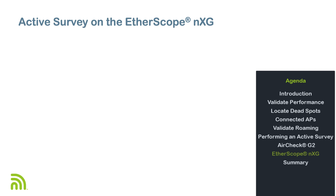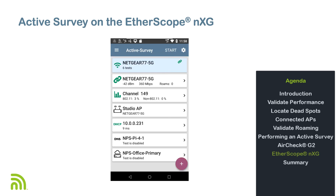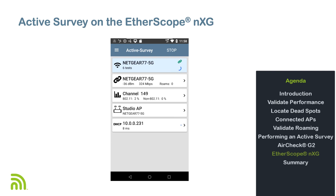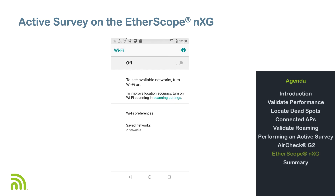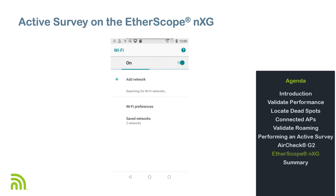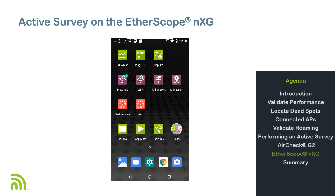The Etherscope NXG has two Wi-Fi radios: both a 1x1 802.11 AC radio and a 4x4 802.11 AC radio. This is a great advantage since it allows you to perform two different surveys in parallel. For example, you can do two active surveys, or you can do both an active and passive survey on the same walkthrough. This is a great way to collect performance data on two networks at the same time, or compare performance between clients using 1x1 or 4x4 radios.